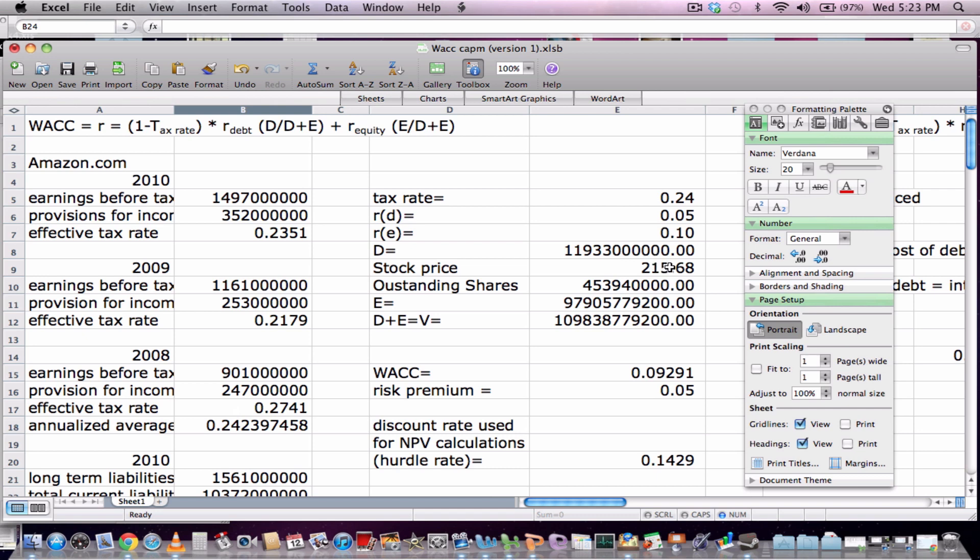So you can find that on Yahoo Finance, Google Finance, Bloomberg, anything like that. Now to find the total equity, you simply times the stock price by the number of outstanding shares, and you get the equity of the company.